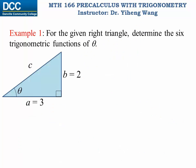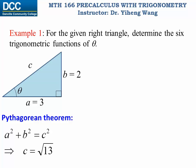Let's look at this example. For this given right triangle, we know the length of two sides a and b, and we need to determine the six trigonometric functions for this angle theta. Based on the definition introduced earlier, in order to find all six trigonometric functions we need to know the length of the hypotenuse side as well. Since this is a right triangle, we can apply the Pythagorean theorem: a squared plus b squared equals c squared, and from this we can solve for c to be the square root of 13.